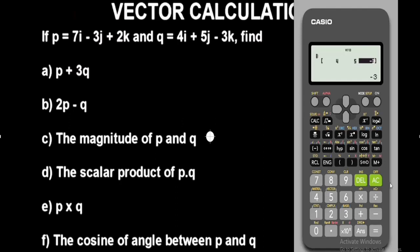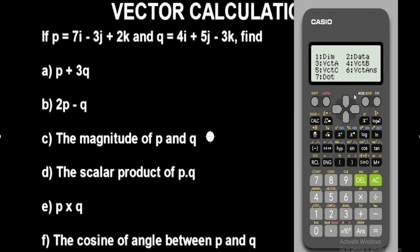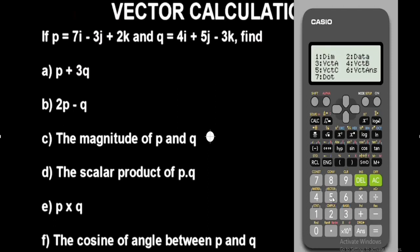Now let's begin to find what we need respectively. First, vector P plus vector Q — the addition of the vectors. To do this press Shift 5. Select vector A, which represents vector P, so press 3. Then plus. Select vector Q by pressing Shift 5 again — vector B is option 4. Press equals to get the output, which gives you the addition of the two vectors.